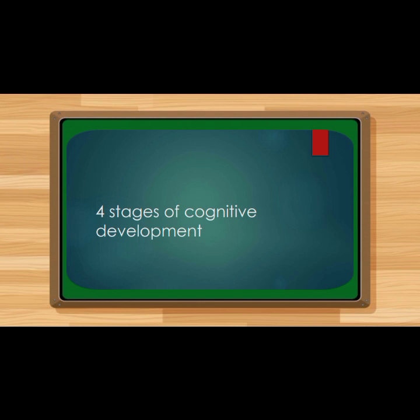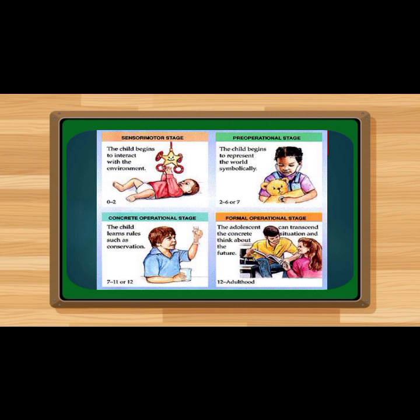After the different basic cognitive concepts by Jean Piaget, we will now discuss the different stages of cognitive development. There are four stages: the first is the sensorimotor stage, the second is the pre-operational stage, the third is the concrete operational stage, and the fourth and last is the formal operational stage. The sensorimotor stage: the child begins to interact with the environment. The pre-operational stage: the child begins to represent the world symbolically. The concrete operational stage: the child learns rules such as conservation. The formal operational stage: the adolescent can transcend the concrete situation and think about the future.